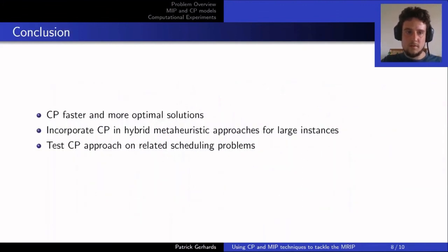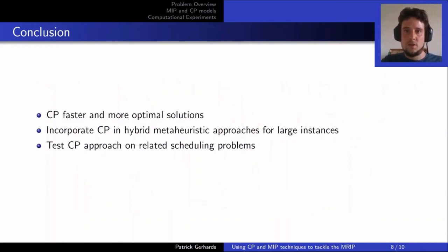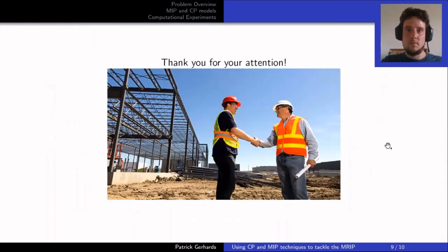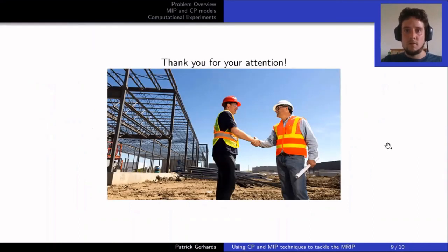CP is faster and produces more optimal solutions. We plan to incorporate this CP approach into hybrid meta-heuristics like large neighborhood search in the future, to tackle larger instances and also test on related problems such as RCPSP or the multimode RCPSP. Thank you for your attention.